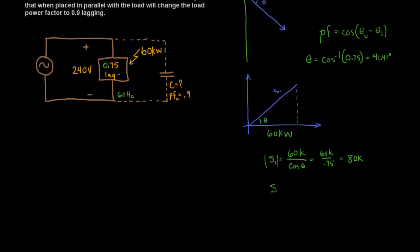If we want to actually find the phasor, well, we already have that as well. That would be 80k at an angle of 41.41 degrees.